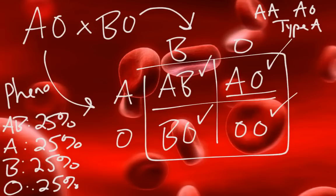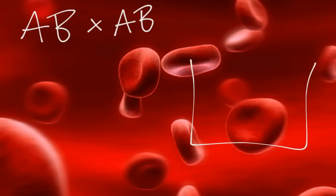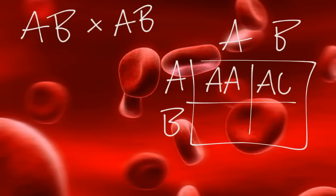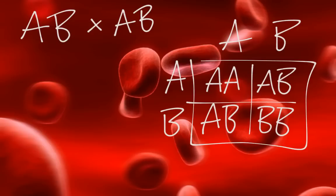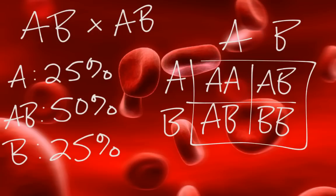Let's do one more example. Say we have a parent that is type AB having children with another parent that is also type AB. We draw our Punnett square, put one parent on top and one on the side, and fill it out. The phenotypic ratios are: 25% type A, 50% type AB, and 25% type B. So no type O offspring are possible from an AB × AB cross.